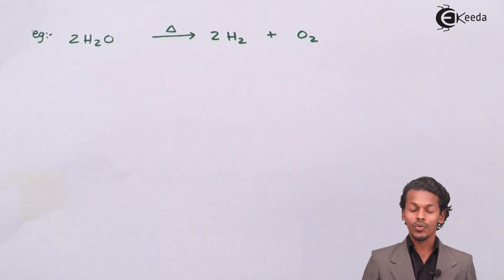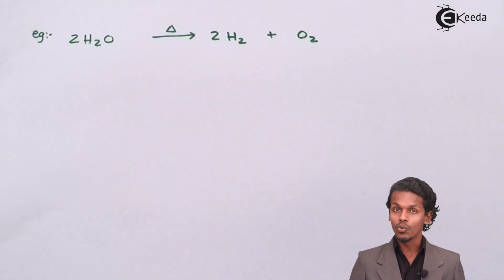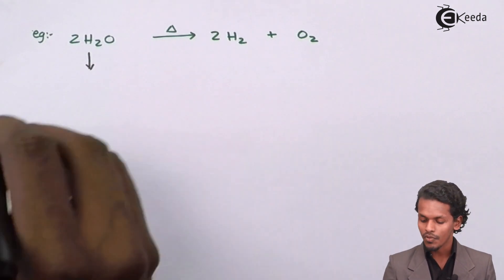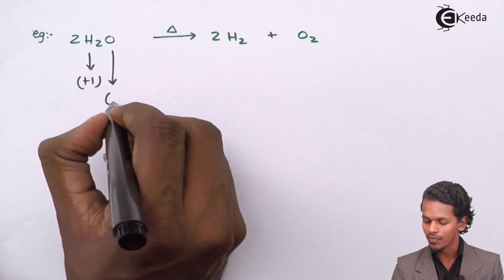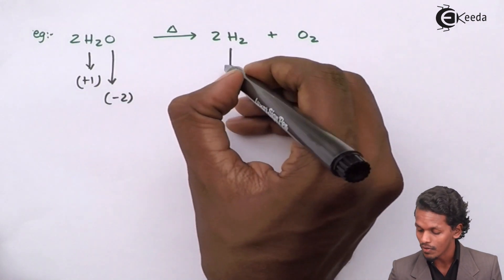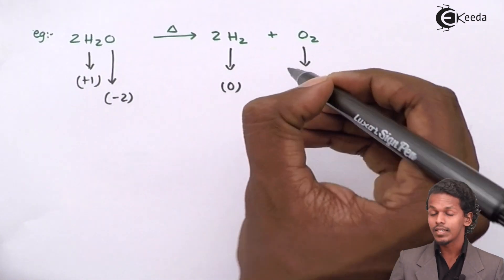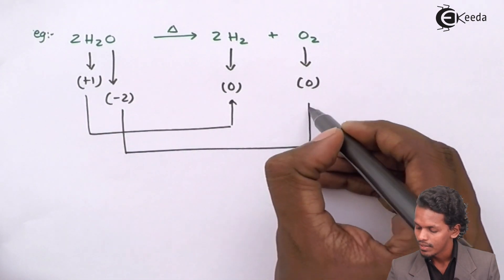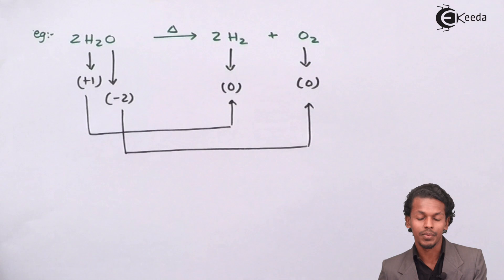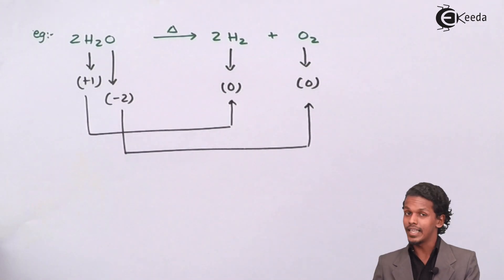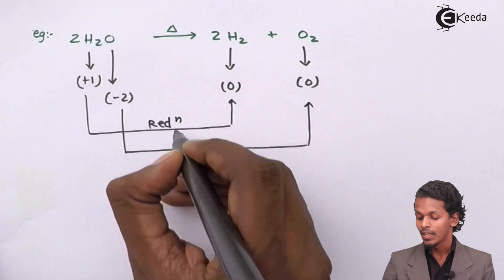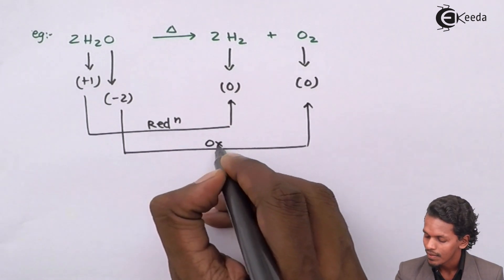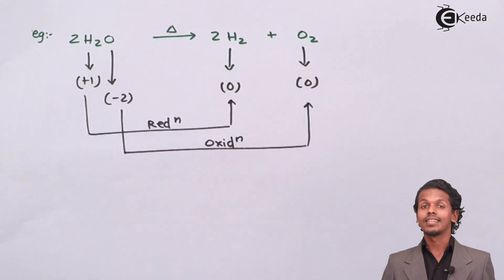Here is another example: a water molecule undergoing thermal decomposition to give hydrogen molecule H₂ and O₂. In water, hydrogen has an oxidation number of +1 and oxygen has an oxidation number of −2. In the products, hydrogen in H₂ has an oxidation number of 0, and oxygen in O₂ also has an oxidation number of 0. The oxidation number of hydrogen decreases from +1 to 0 — that is reduction. The oxidation number of oxygen increases from −2 to 0 — that is oxidation. Hence this is a redox reaction.